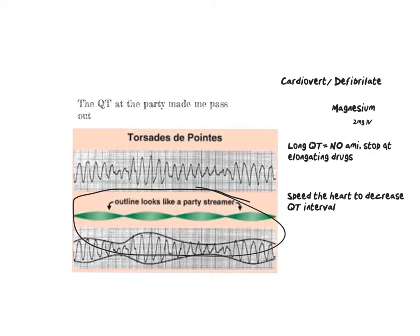We don't want to give amiodarone for torsades, and we want to stop all QT-prolonging drugs, such as Zofran — ondansetron — which is an anti-nausea medication that increases the QT interval. It's normally caused by low magnesium, so we're going to give magnesium 2 grams IV. Basically our goal here is to speed up the heart to decrease the QT interval.